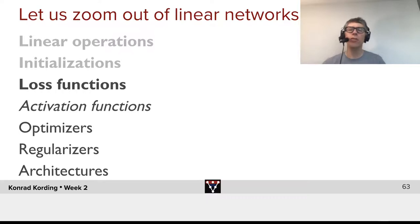Now, let's zoom out a little bit. Today, we, of course, focus on linear networks, but what are the components of neural networks? We have linear operations, we have initializations, we have loss functions, activation functions, optimizers, regularizers, and architectures. That's arguably the building blocks that we build everything out of.